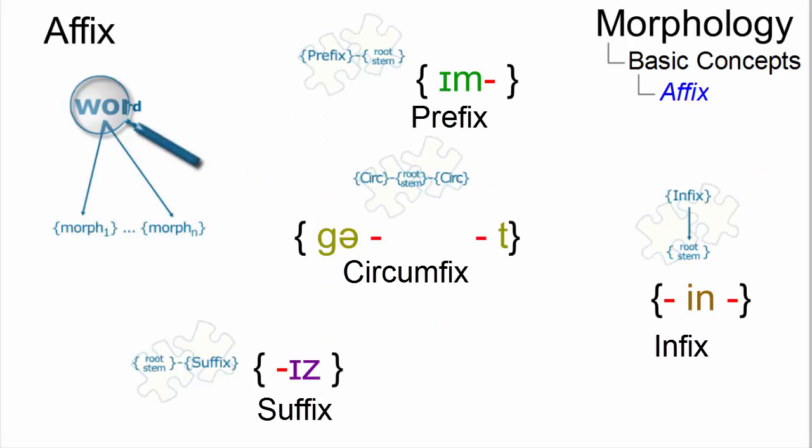Affixes are limited in number in a language. The morphological operation which attaches an affix to another morph is referred to as affixation, or more generally as concatenation.